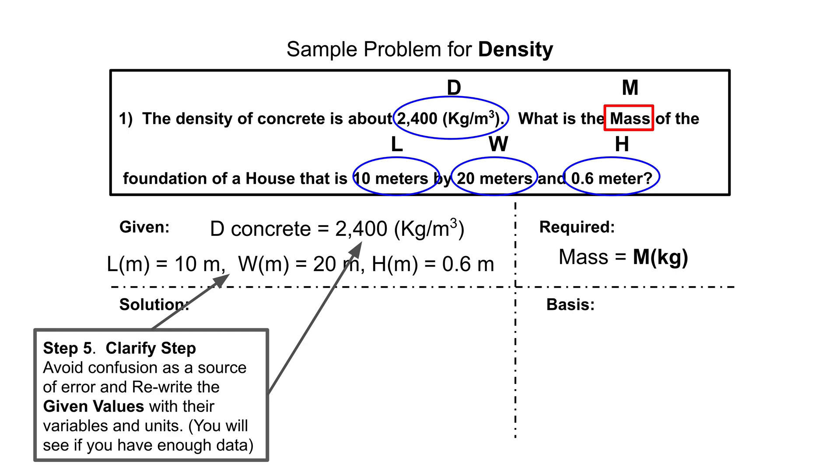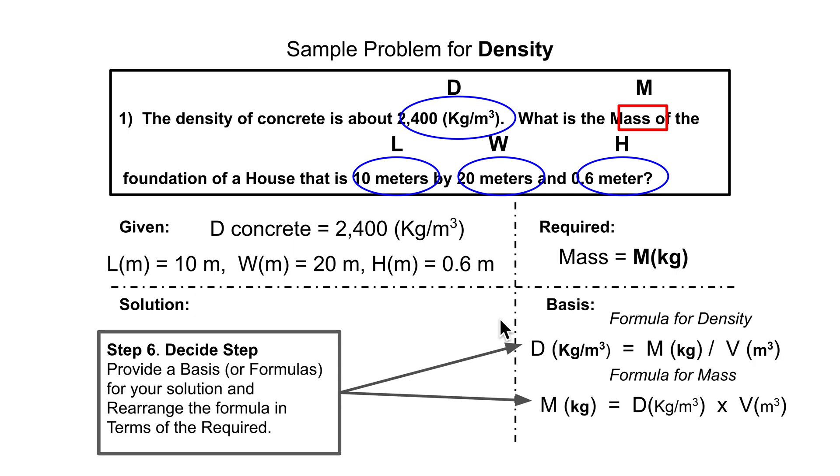Then you have to provide a basis for the solution, and usually that is a formula. They write down the standard form of the formula. So in this case, density is equal to mass divided by volume. But then rearrange it such that on the left side, you will have the required quantities. So here we have mass is equal to density times volume.